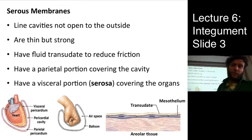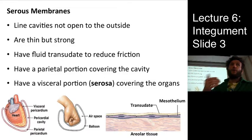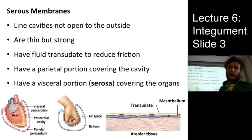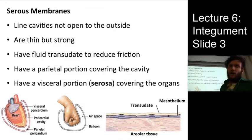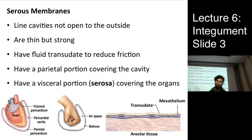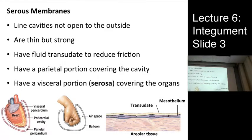The second type of tissue membrane is serous membranes, of which there are three types. These line various cavities that are not open to the external environment but still need a moist surface to reduce friction or for various secretions. They're thin, strong, and produce a fluid transudate whose primary job is to reduce friction. So if its job is to reduce friction, where would you intuit finding one of these serous membranes?